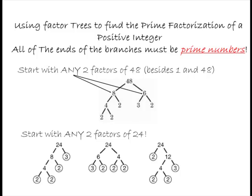Prime numbers are numbers such as 2, 3, 5, 7, 11, 13, etc. These are numbers that have only two factors: one and itself, no other factors. So what we're looking for is all prime numbers in terms of the factors. Notice the number 6 can be broken up into 3 times 2 — each one of those are prime, so we're done. Those are the ends of the branches, the last factors.